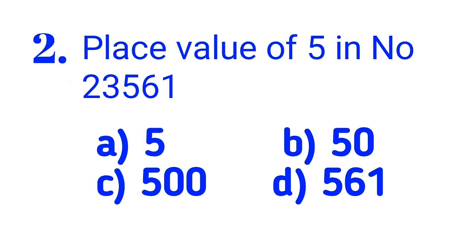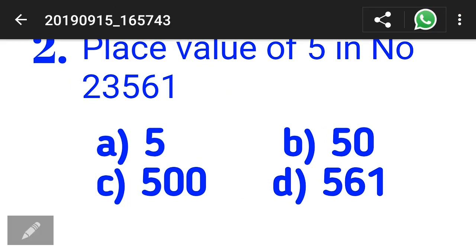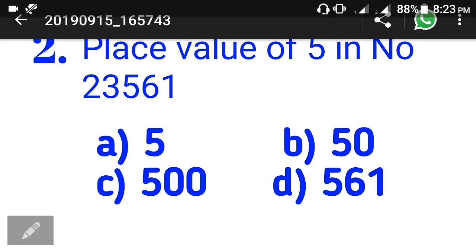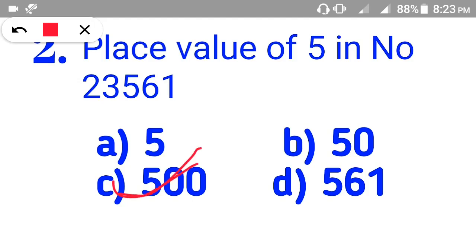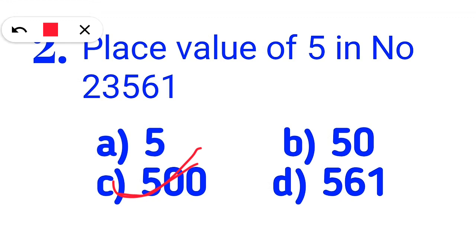Number 2: What is the place value of 5 in the number 23561? The options are B: 50, C: 500, and D: 561. The correct answer is C. Now, number 3.